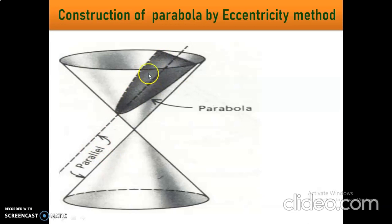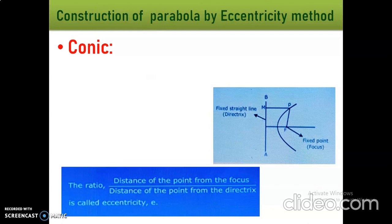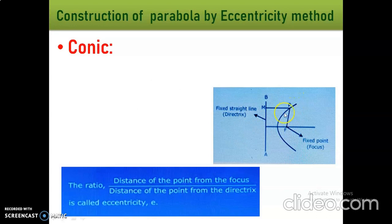Next topic: what is conic? Conic is nothing but a curve — conic and curve are the same. Conic is defined as the locus of a point moving in a plane such that the ratio of its distance from a fixed point to a fixed straight line is always constant. The fixed straight line is called the directrix, and the fixed point is called the focus.